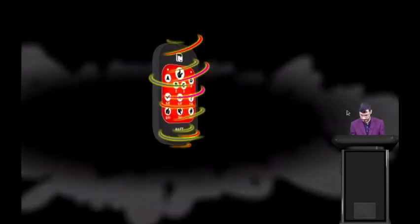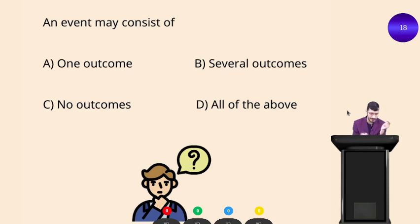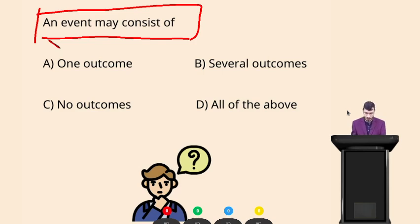Question time: an event may consist of — which option is correct? Option A: 1 outcome; Option B: several outcomes; Option C: no outcomes; Option D: all of the above. I'm giving you 30 seconds. Time's up — the right answer is all of the above. An event may consist of one outcome, several outcomes, and no outcomes, so option D is the right answer.